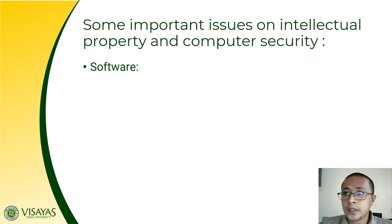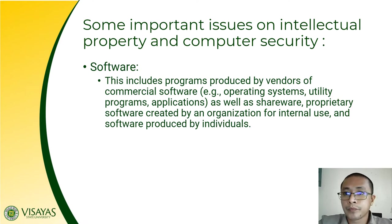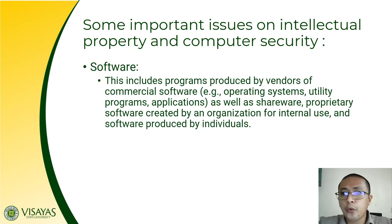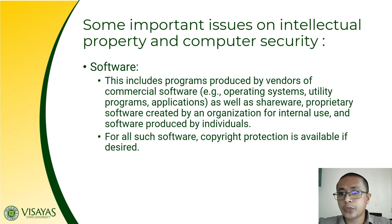There are some important issues on intellectual property and computer security. The most commonly exploited resources include software — this includes programs produced by vendors of commercial software like Microsoft, who produce Windows operating systems. It includes operating systems, application software, utility programs, shareware, proprietary software created by an organization for internal use, and software produced by individuals. For all such software, copyright protection is available if desired.